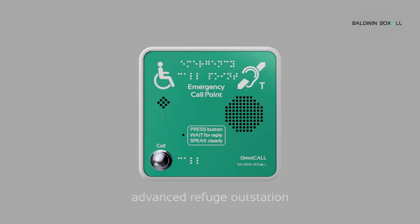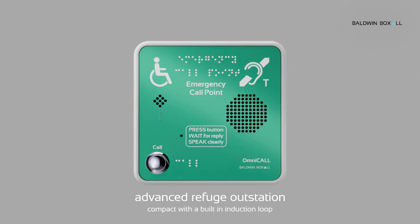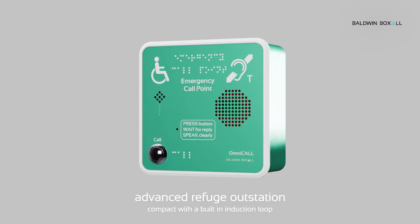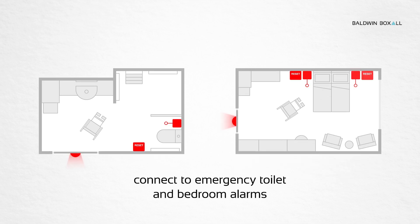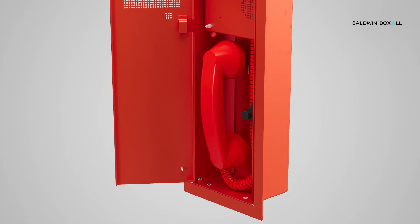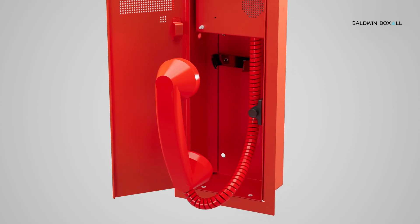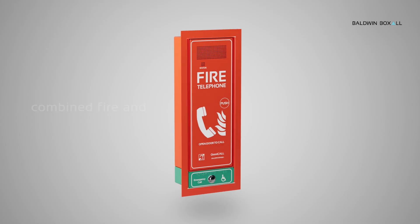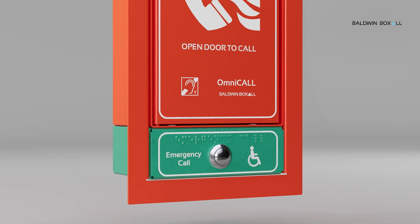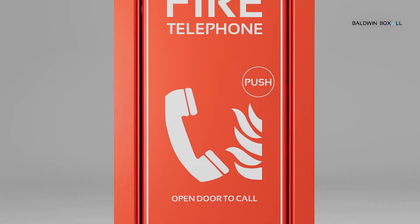Advanced refuge outstation — compact with a built-in induction loop. Connect seamlessly to emergency toilet and bedroom alarms. Fire and steward telephones for essential communication for those in control. Combined fire and refuge outstation for full emergency communication.